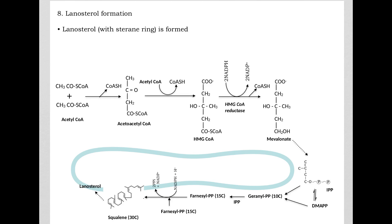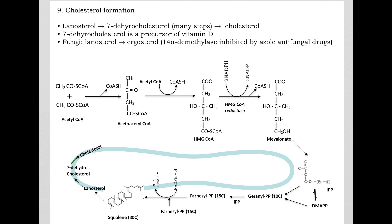After several reactions, the squalene is then made into a cholesterol-like chemical called lanosterol. Lanosterol has the sterane ring just like cholesterol. The lanosterol is then converted to 7-dehydrocholesterol after several reactions. And then in the last step, 7-dehydrocholesterol is made into cholesterol. Recall that this 7-dehydrocholesterol is a precursor of vitamin D.